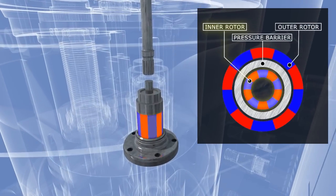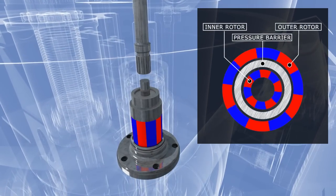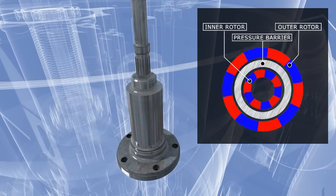Magnetic couplings are used to transfer the torque from the external motors to the well pressure side without the need for dynamic seals.